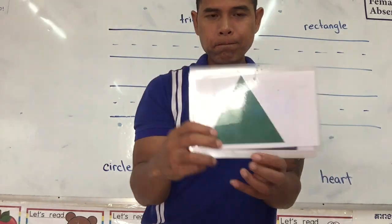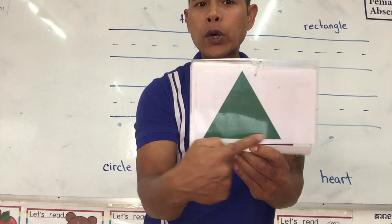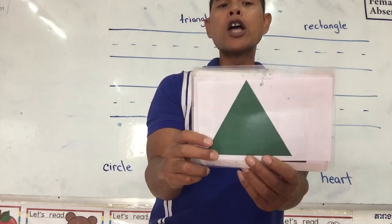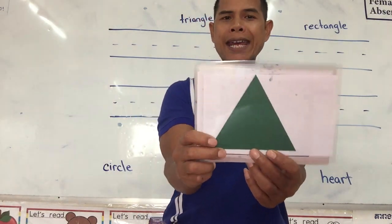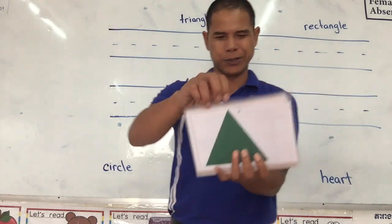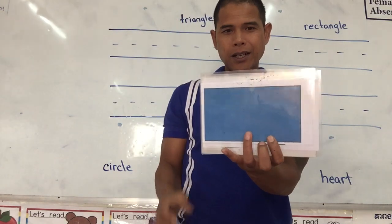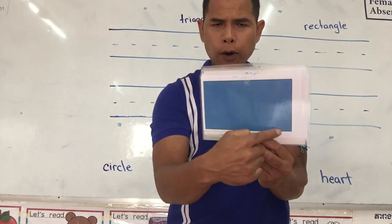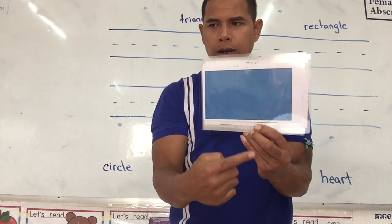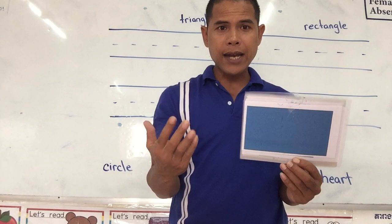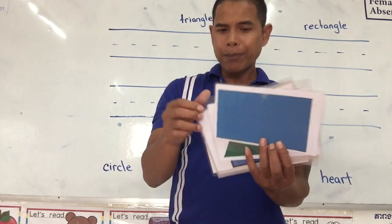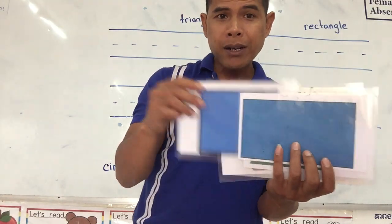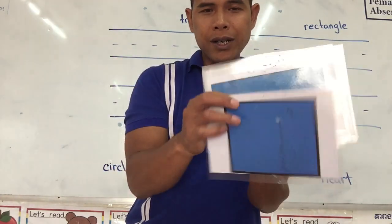This one only has three sides — one, two, three. It is called a triangle. Now this one has one, two, three, four sides. But wait — teacher, you said four sides is a square, right? Yes, I said four sides is a square, but four sides that are equal.